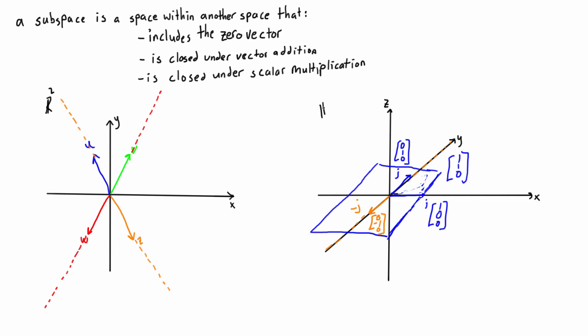So in R3, a subspace can be a plane or a line. A plane has two dimensions and a line has one — both are less than the three dimensions of R3. In R2, a subspace is just a line, which has fewer dimensions than the entire vector space. We can extend this logic to any number of dimensions — it works in Rn, or R100. As we increase dimensions, speaking about lines and planes stops making sense, but as long as you follow these rules and remember that subspaces are characterized by the spans of sets of vectors, if you're not spanning all of Rn, you're spanning some kind of subspace.